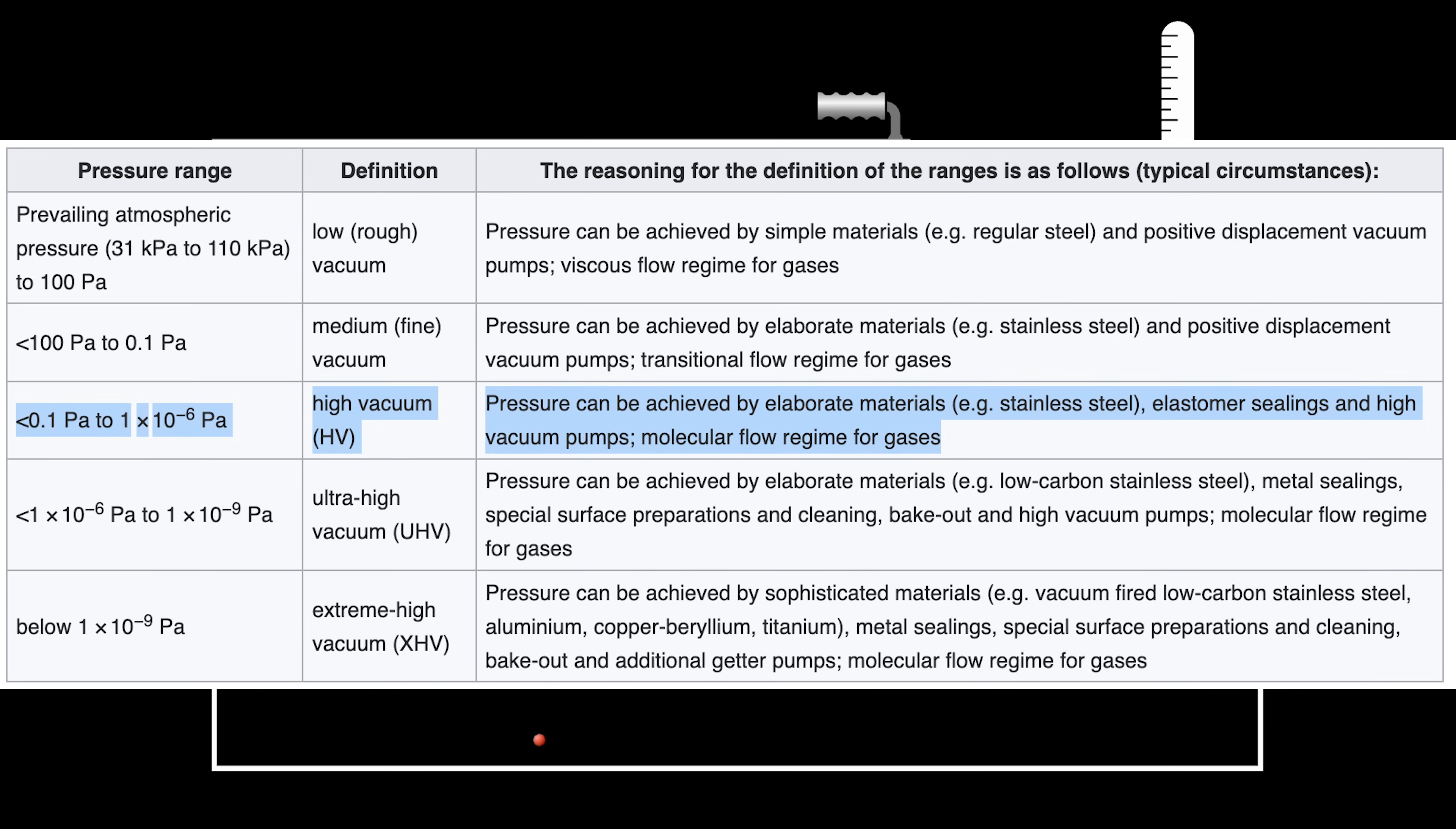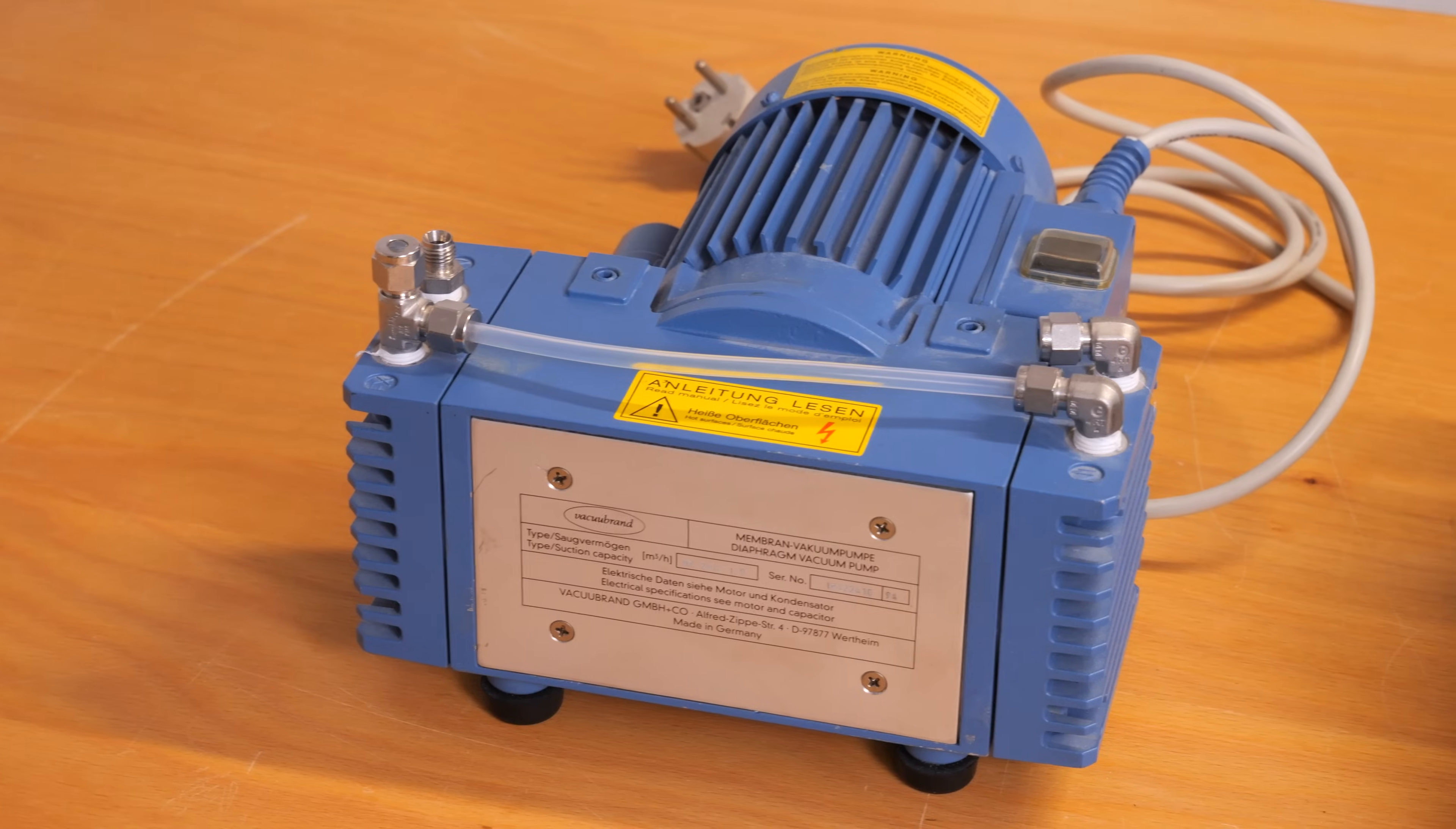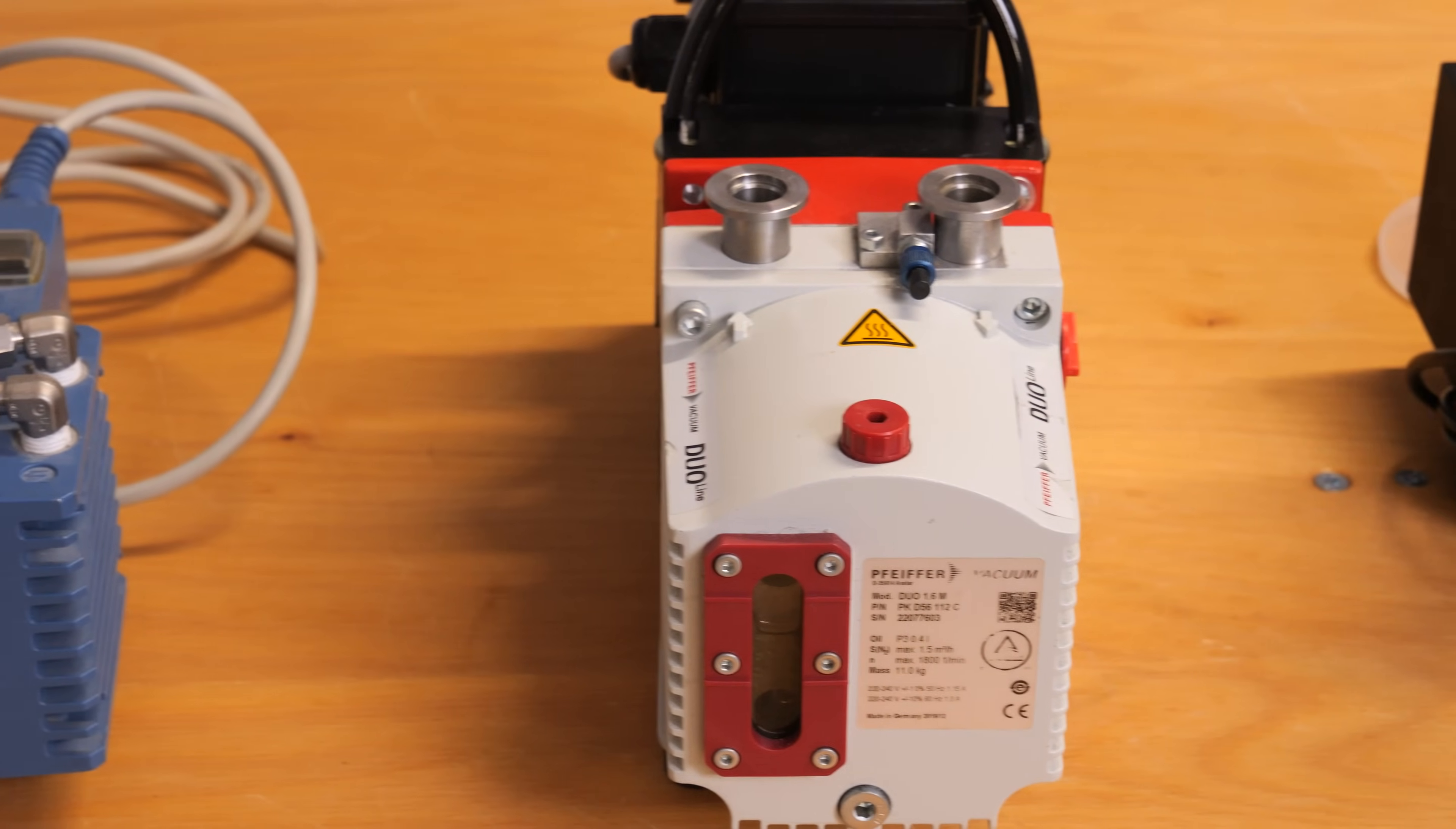At this stage, particles travel independently on straight paths through space, rendering the aforementioned pumps ineffective. They only work in the viscous flow range, where the air behaves somewhat like a liquid.